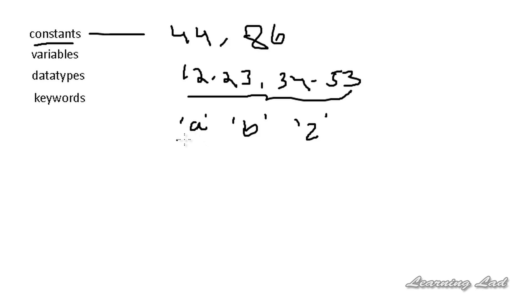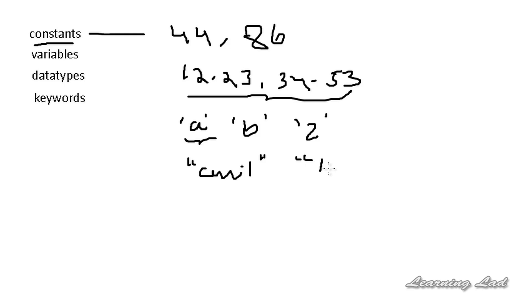A character constant is written in single quotes. And then we have string constants which are written in double quotes — for example "anil" or "lad" — which is a bunch of characters. These are called string constants.